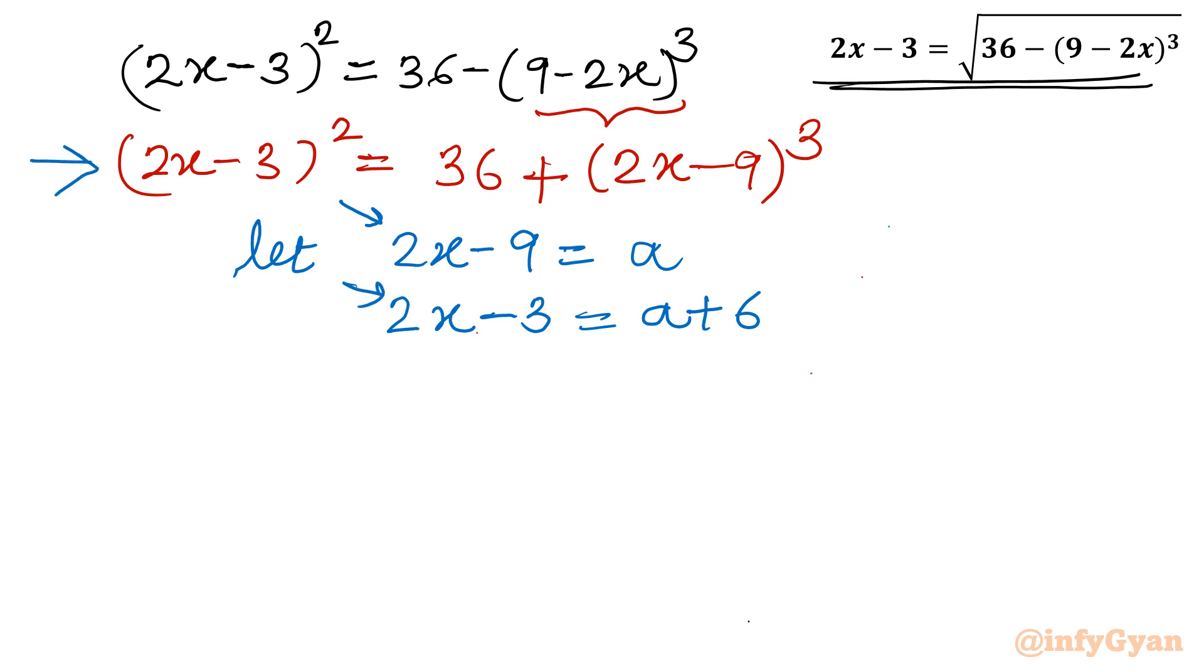In place of 2x minus 3, I will write a plus 6 whole square equal to 36 plus a cube. Now you can either expand or consider 36 to the left. Then it is a square minus b square formula. So a plus 6 whole square minus 36, which is 6 square, equal to a cube.